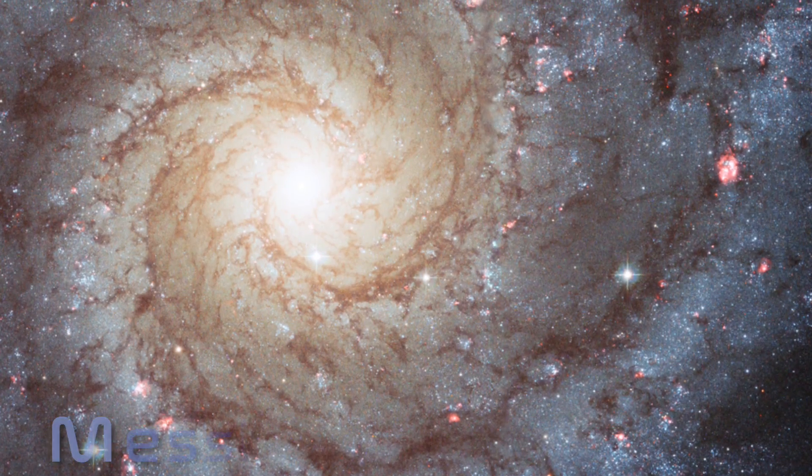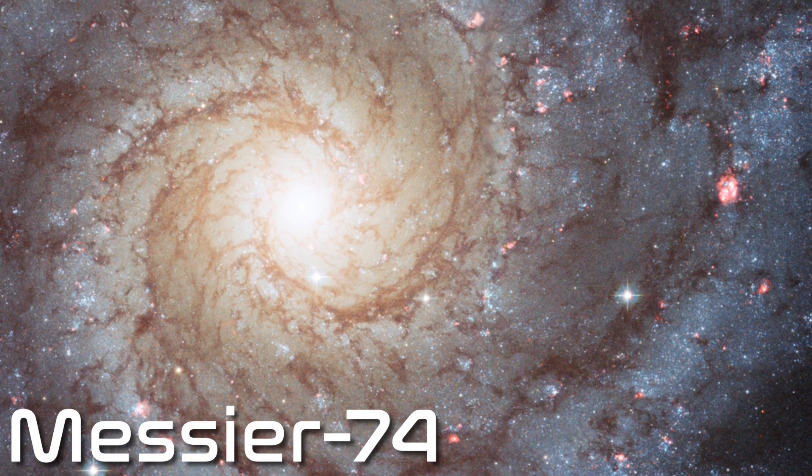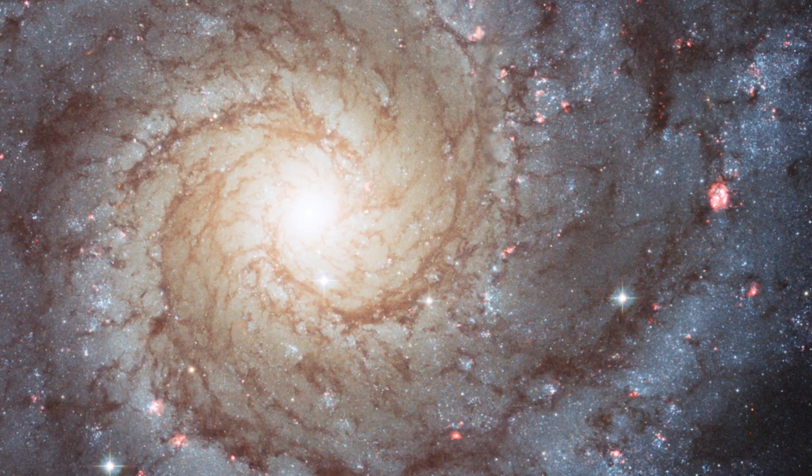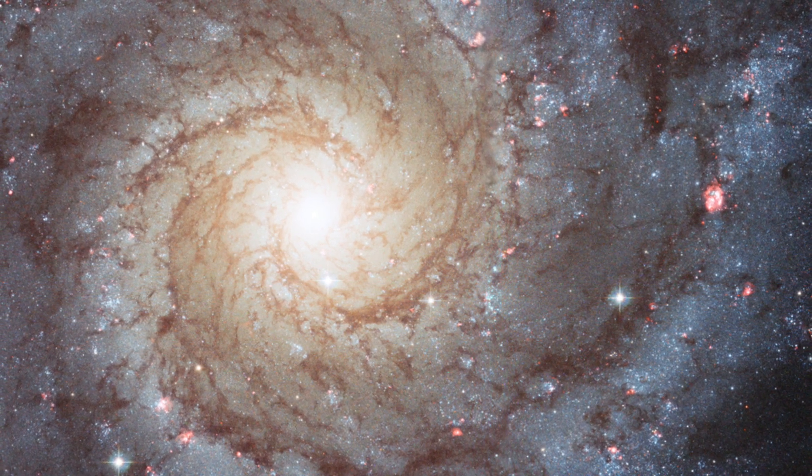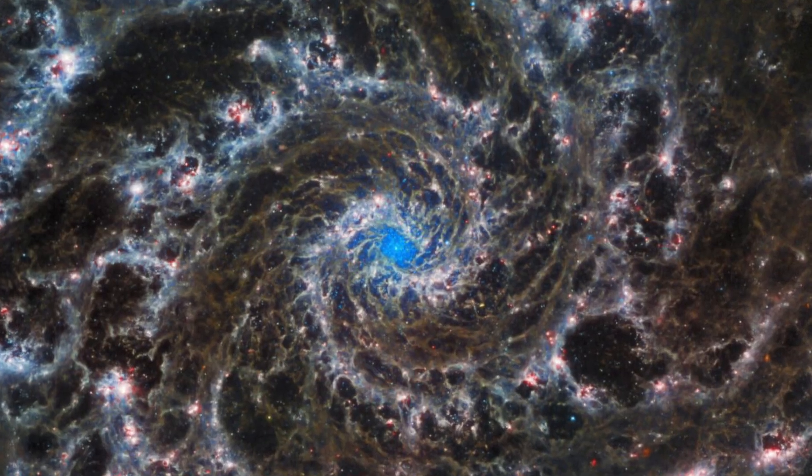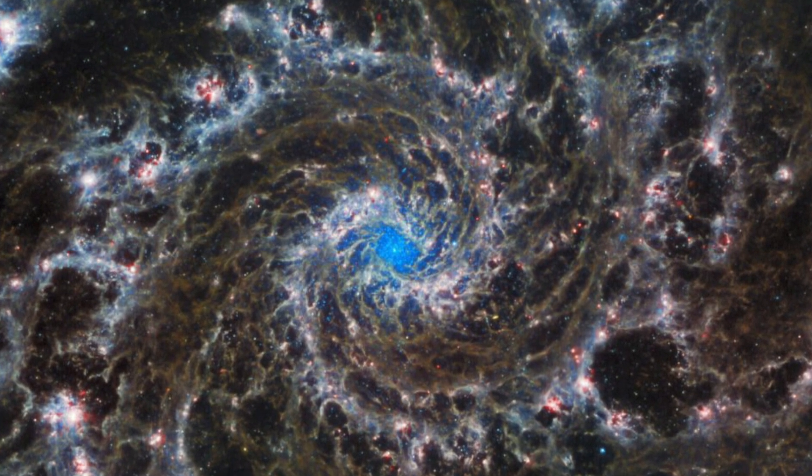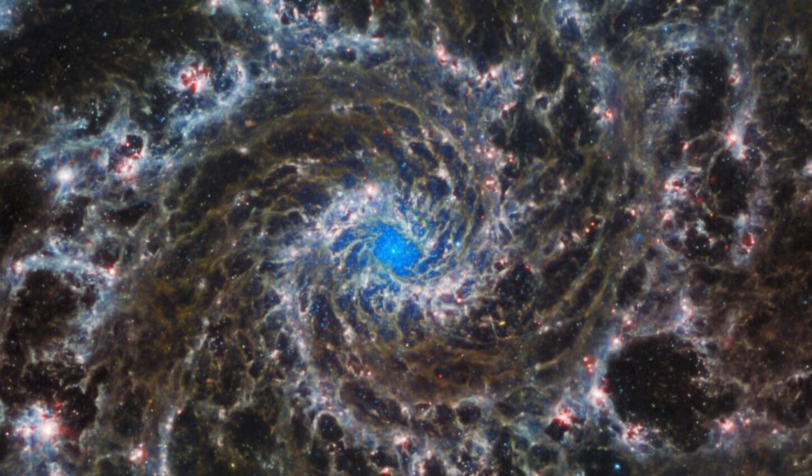Take a look at this image. This is an image of Messier 74, a galaxy located 30 million light years away from us. At first sight, there isn't anything intriguing about it. But now, take a look at this image. This is also a photo of the same galaxy, but using the latest and most advanced space observatory.